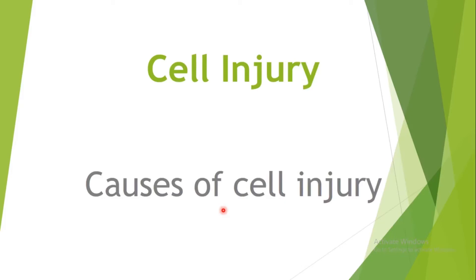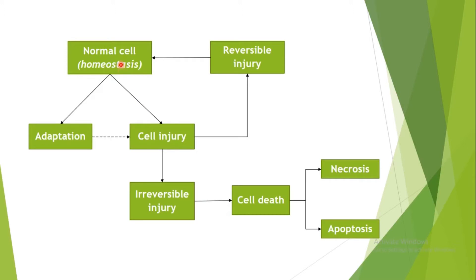Welcome to Dosis Pathology Review. In today's video I'm going to talk about the causes of cell injury. This is our map, and this is a normal cell in a state of homeostasis. When this cell faces any type of stress, it's going to try its best to adapt to this new environment. If the cell is unable to adapt, cellular injury develops. Depending on the severity, type, and duration of the injury, it can be reversible or irreversible. Reversibly injured cells can return to normal with removal of the stressful agent, but if stress persists, irreversible injury develops and the cells die by either necrosis or apoptosis.